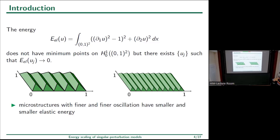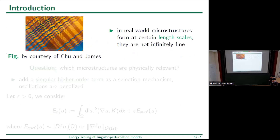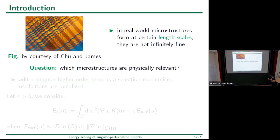So the elastic energy is in general highly degenerate: lack of convexity also means lack of uniqueness even among minimizing sequences. From this point of view, with elastic energy alone it is always better to have finer and finer oscillations, but in the real world microstructures are observed at a certain length scale — they are not infinitely fine, as seen in experimental pictures. Since elastic energy alone is not enough to select physically relevant microstructures, we need to ask which of these microstructures are physically relevant.